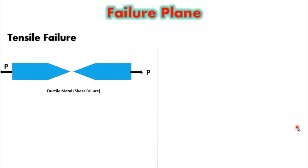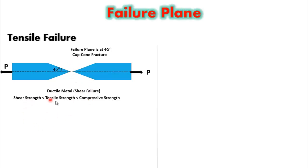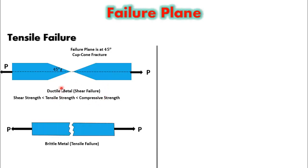Now we will discuss the failure plane of brittle and ductile materials under tensile loading. For a ductile material stretched by tensile force, it will fail in shear with the failure plane at 45 degrees, and cone formation will occur before failure. The shear strength is less than tensile strength, which is less than compressive strength. For a brittle material under tensile force, no cone or cup formation occurs; the failure plane is at 90 degrees and the failure is tensile. In brittle materials, tensile strength is less than shear strength, which is less than compressive strength.